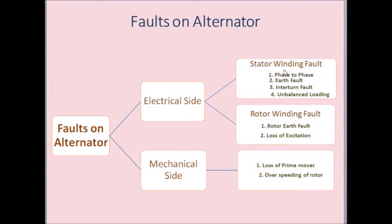Therefore, there is a possibility of phase-to-phase insulation failure, causing a phase-to-phase fault inside the alternator. There is also a possibility of insulation failure between any one phase and the core of the alternator, leading to an earth fault in the stator winding. There may be insulation failure between any two adjacent turns on a phase winding, and there may also be a possibility of unbalanced loading on the terminals of the alternator.